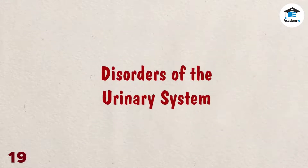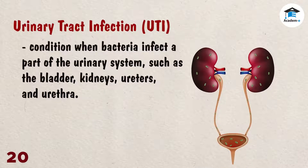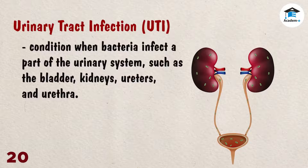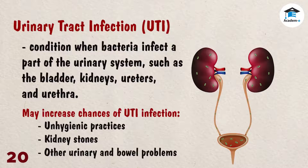Disorders of the urinary system. Urinary tract infection (UTI) is a condition when bacteria infect a part of the urinary system, such as the bladder, kidneys, ureters, and urethra. Unhygienic practices, kidney stones, and other urinary and bowel problems increase the chances of being infected with UTI.